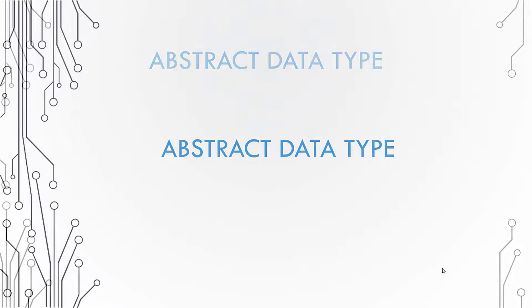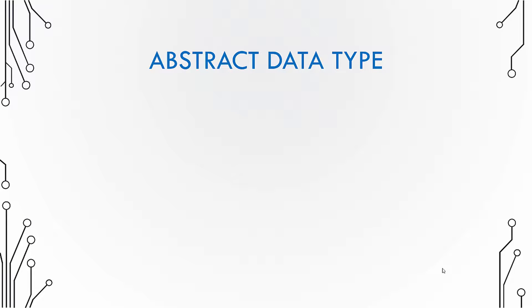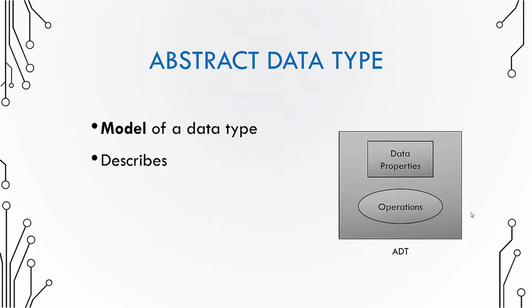In this video let us see what is an abstract data type. When you talk about abstract data type you talk about something that models a data type and by modeling a data type we say that it describes the data properties and the operations that can be done on that type of data.